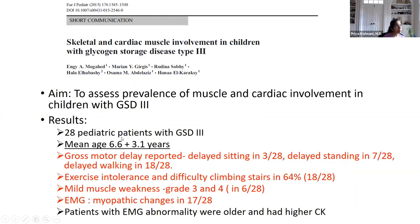A second study in pediatric patients with a mean age of six years showed gross motor delay — delayed sitting, standing, and walking — as well as exercise intolerance and muscle weakness graded three to four out of five. Electromyogram changes were noted in more than three-quarters of these children. The take-home message: while we focus on liver and hypoglycemia, we must also recognize that skeletal and heart muscle involvement occurs early in GSD type 3.